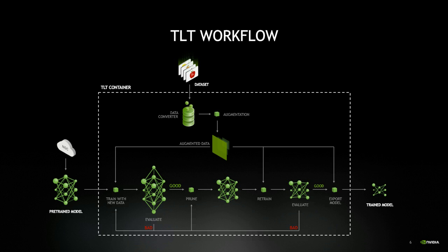Once you have the augmented dataset, you start training. After initial training you evaluate the model against the validation set. If accuracy is acceptable, you move to model pruning; if not, you adjust hyperparameters and restart. Pruning removes nodes that don't contribute to overall accuracy. Model pruning will result in some loss of accuracy, so the next step is to retrain to regain that accuracy. If you can't regain accuracy, you reduce the pruning threshold and repeat, or restart — possibly increasing your dataset.